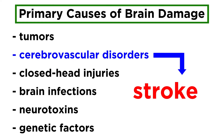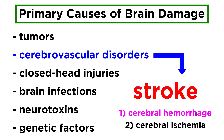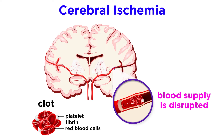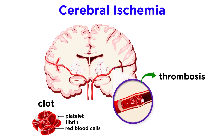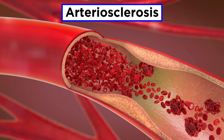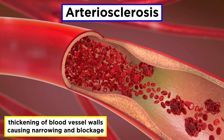The most common cerebrovascular disorder is commonly referred to as a stroke. There are two types of strokes: a cerebral hemorrhage, which occurs when a blood vessel in the brain ruptures allowing blood to seep into neural tissue and damage it, and a cerebral ischemia, which occurs when blood supply to a part of the brain is disrupted. This can be due to a plug or block in a small vessel called thrombosis, or an embolism if the block is transported from a larger vessel. It can also arise due to arteriosclerosis, where blood vessel walls become thicker and channels narrow until blockage occurs.